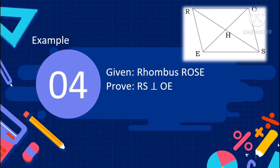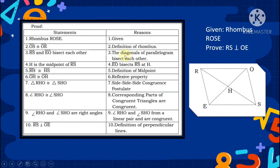Example number 4: given rhombus R, O, S, E, prove that RS is perpendicular to OE. Statement 1: rhombus ROSE — Given. Statement 2: side OS is congruent to side OE — definition of rhombus. Statement 3: RS and OE bisect each other — diagonals of a parallelogram bisect each other. Statement 4: H is the midpoint of RS.